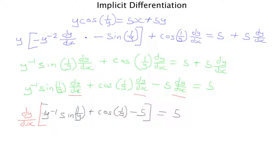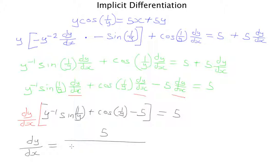Our last and final step is to divide both sides by all the terms attached to dy/dx. Dividing both sides, this side cancels and those terms go to the denominator. So the final answer is: dy/dx = 5 over (y⁻¹·sine(1/y) + cosine(1/y) minus 5). And here we have it!